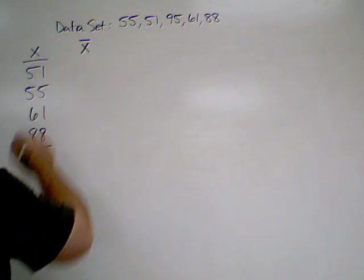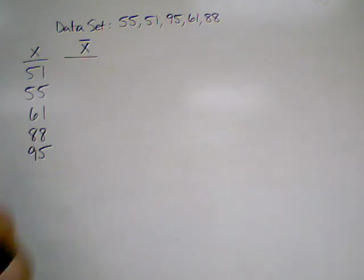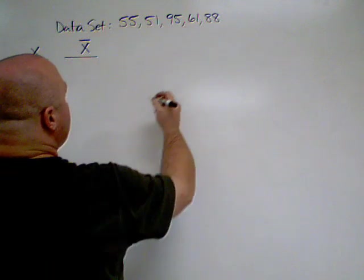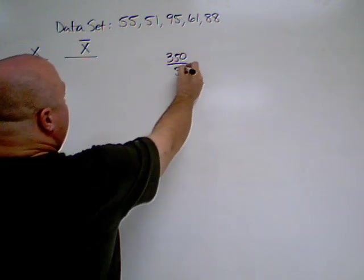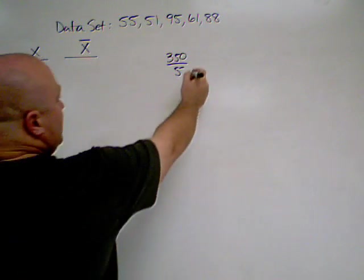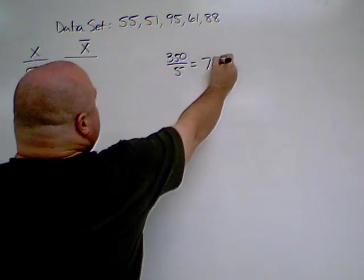Our second column is going to represent our mean. Now, if we were going to calculate this by hand, we would add these up, and we would find that our sum would be 350, and there are five terms in the set, so our mean is actually 70.